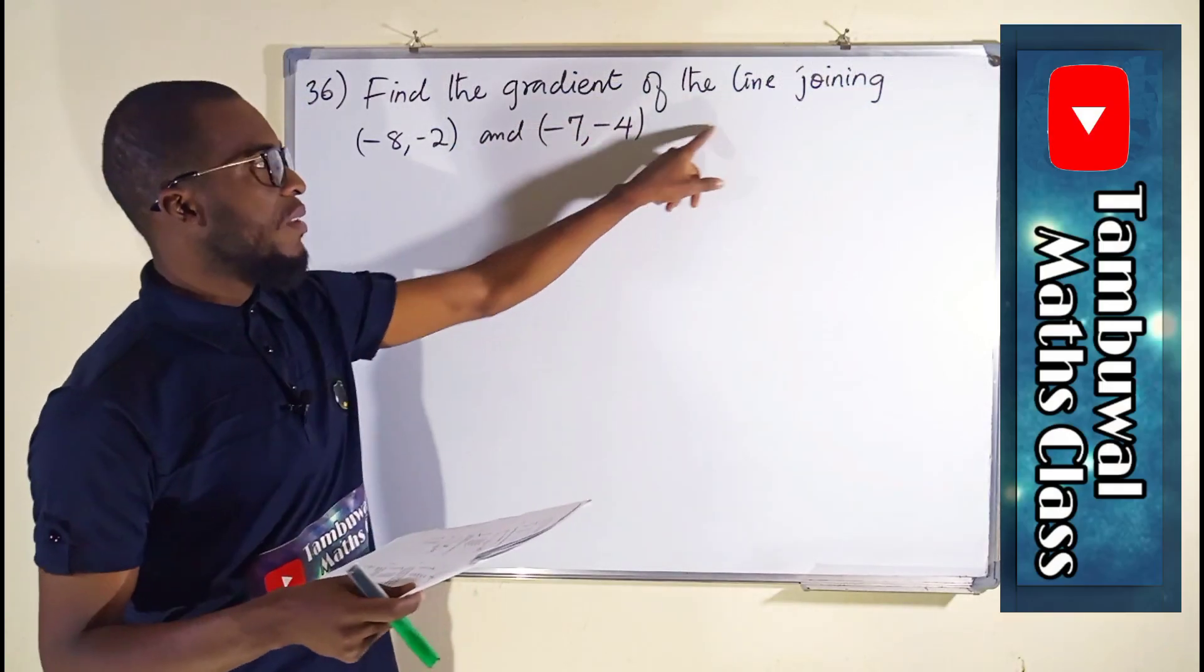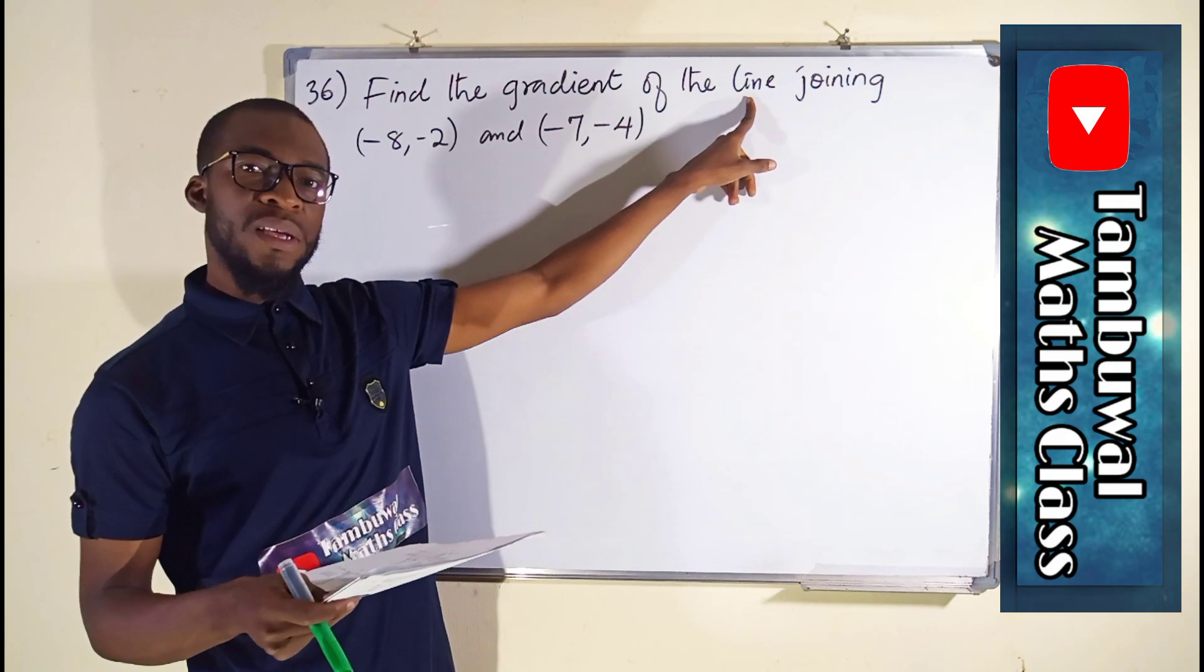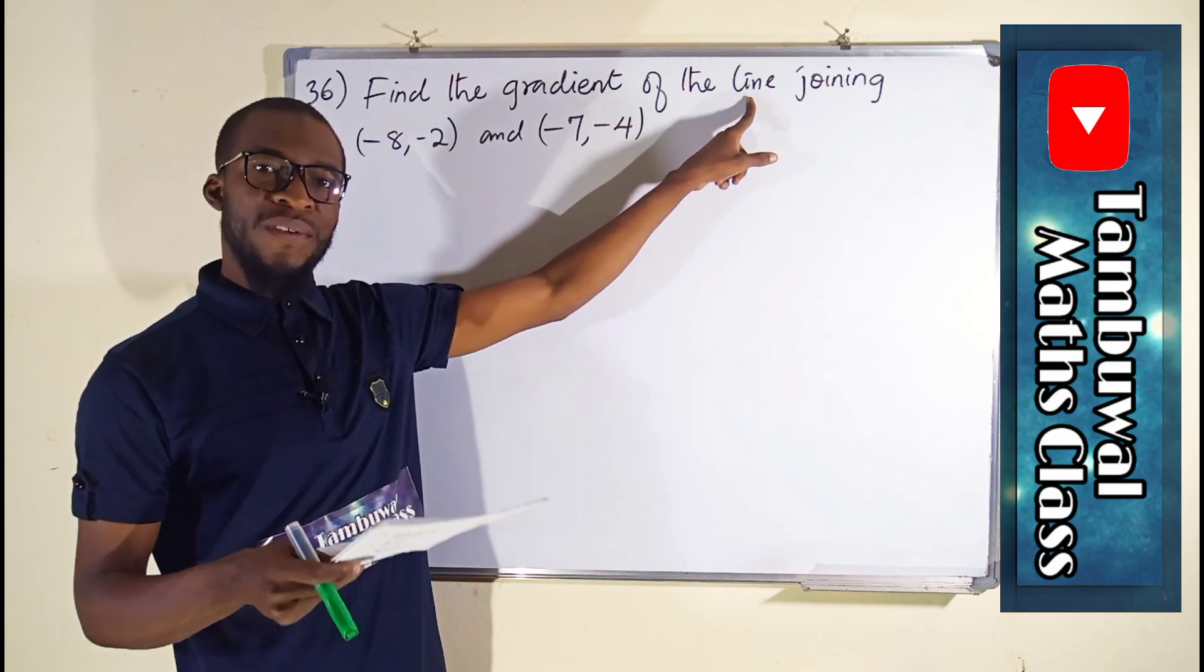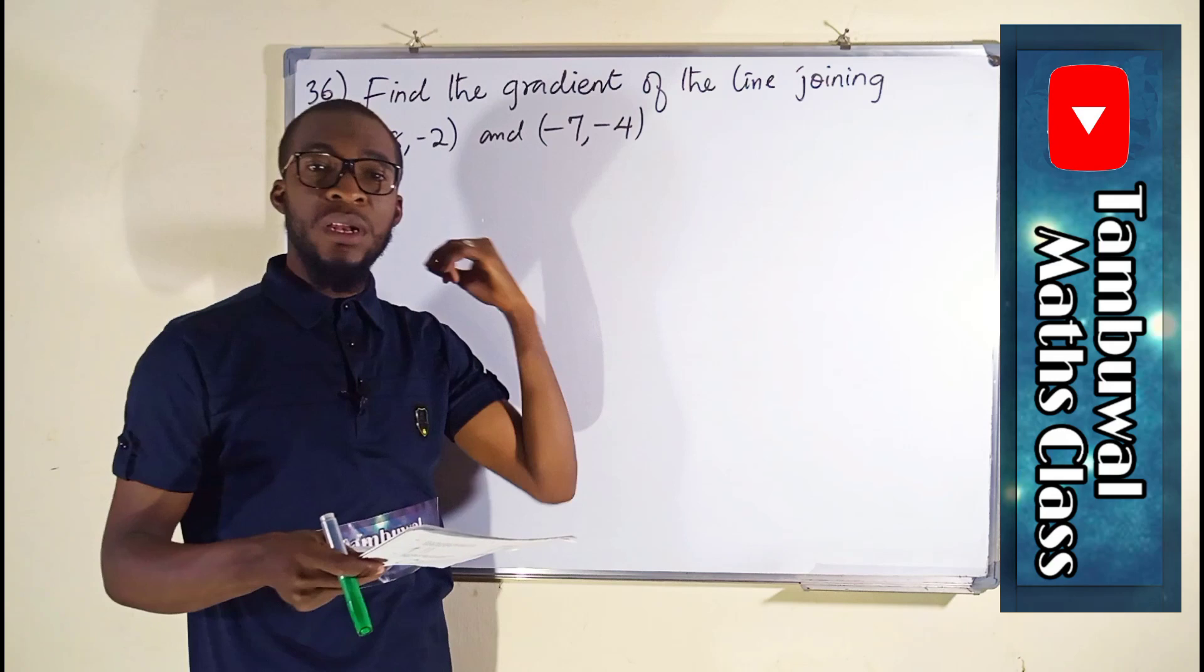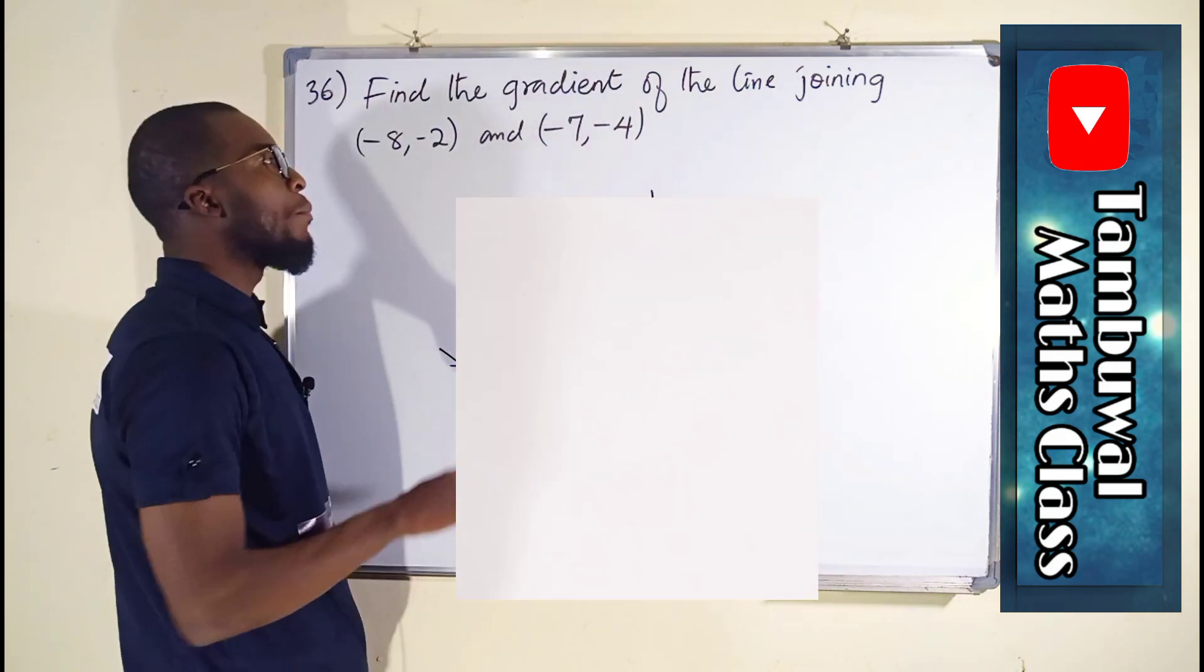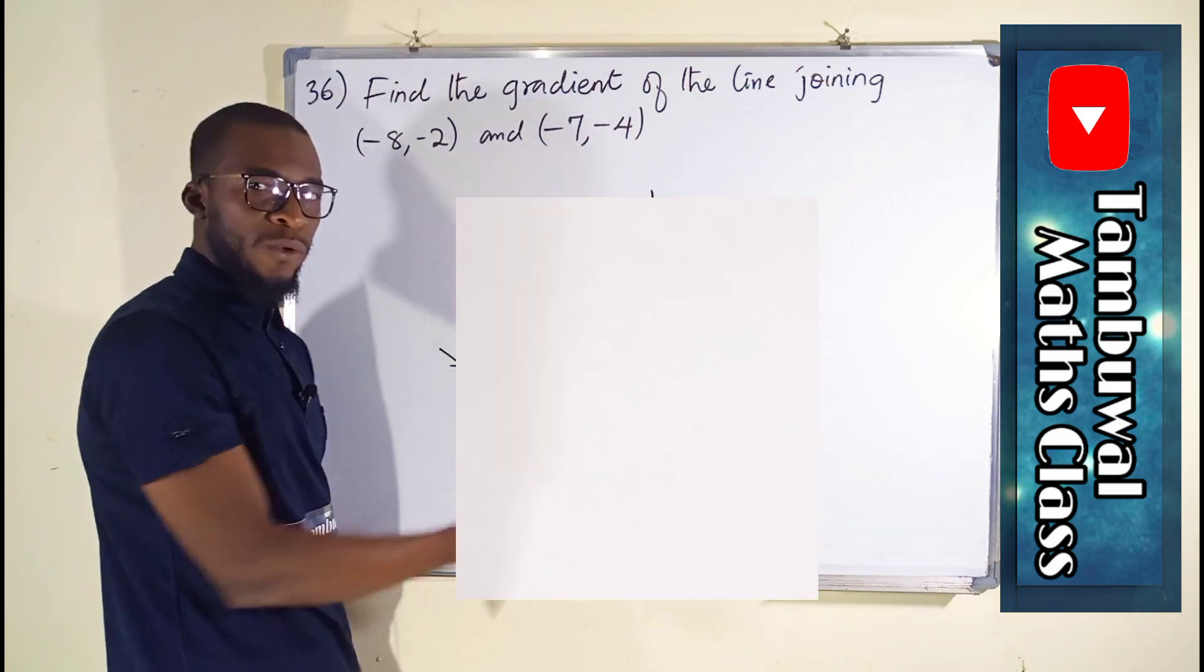Since they say it's a line, it means that it is a linear equation. If it is a linear equation, it will form a linear graph. But since we have our points, no need of plotting any graph.